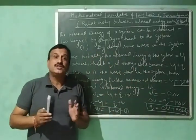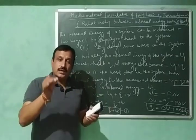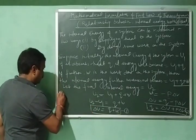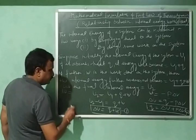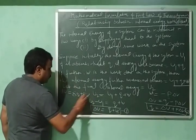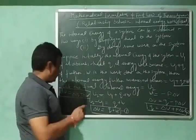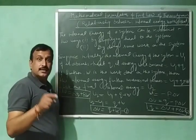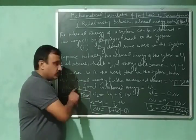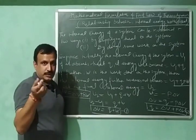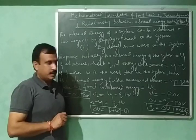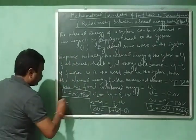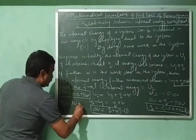Both these equations are for finite changes or large changes. These equations can also be written for infinitesimally small changes. Then the first equation is written as dU equals delta Q plus delta W, where dU is a very small change in internal energy. It is represented by d because internal energy is a state function and it is an exact differential. Whereas Q and W are path functions and are inexact differentials, so their small changes are denoted by the symbol delta.